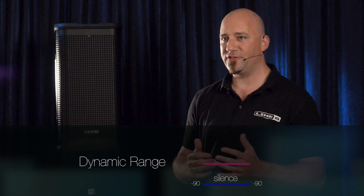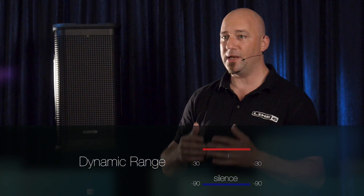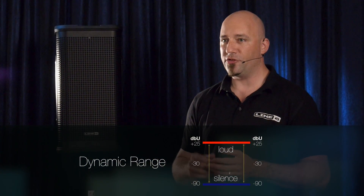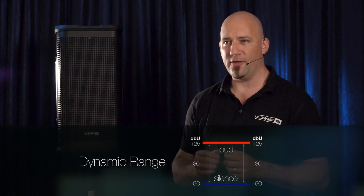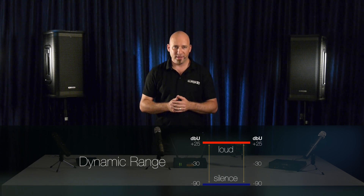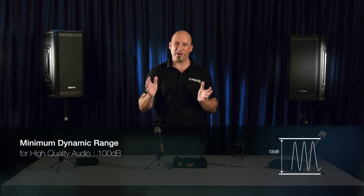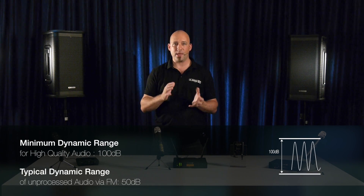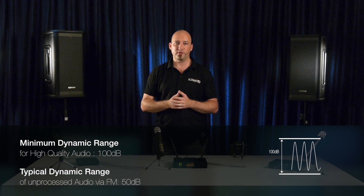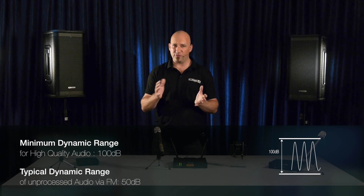Dynamic range is defined as the loudness difference in decibels between the softest and the loudest signals possible in a system. The minimum for high quality audio is considered about 100 decibels. The typical dynamic range of an unprocessed audio signal transmitted via FM is about 50 decibels.